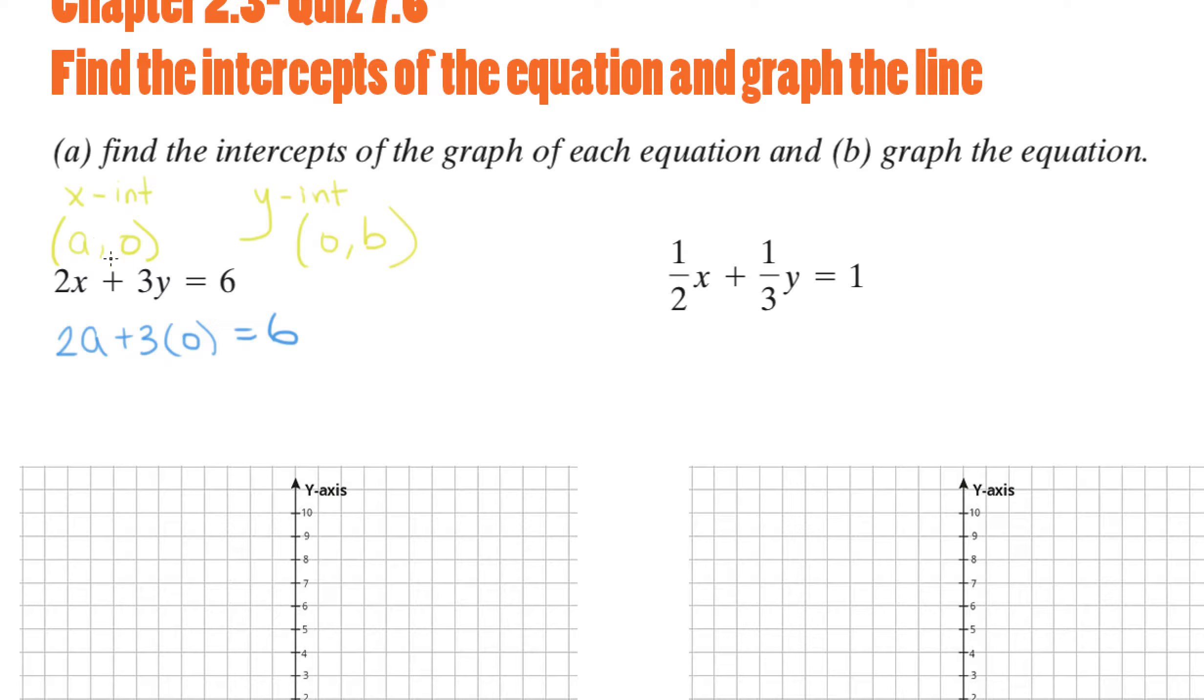This does not mean that this is the procedure you have to follow all the time. This is to differentiate the fact that x and a are two different things. a is a constant, the number we're looking for, and x is a variable. So 2 times a plus 3 times 0 is 2a. Now in order to solve for a, we divide by 2, so a equals 3. Therefore, the x-intercept is the point (3, 0).